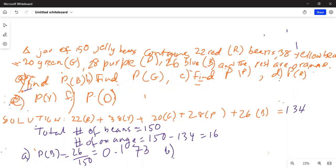Part B, find probability of green. How many greens are there? There are 20 greens out of 150, so 20 divided by 150 is 0.133.